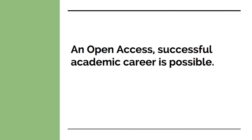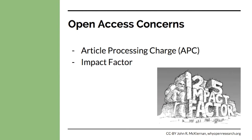The biggest takeaway I want you to gain from this talk is that an open access successful academic career is possible. Now there are still concerns about open access journals, even for those that see the great benefits that open access offers, such as concerns over article processing charges or impact factor. Article processing charges, also known as APCs, are a different model of funding publication costs. Within science, a $3,000 APC is not uncommon. However, the majority of journals do not charge an APC. I can help you explore your options if this is a concern for you.